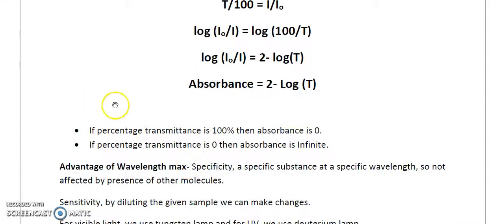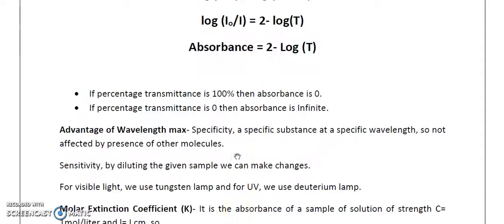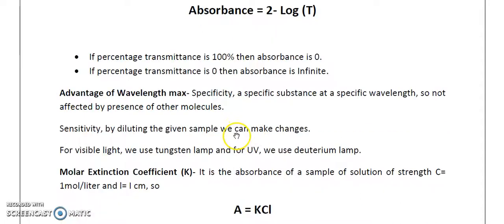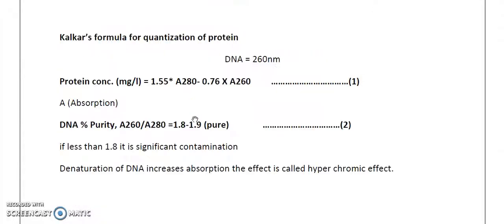From the equation absorbance = 2 − log T: if percentage transmittance is 100, then absorbance will be 0; if percentage transmittance is 0, then absorbance is infinite. Absorbance and transmittance are inversely proportional to each other. A diagram between percentage transmittance on the y-axis and concentration on the x-axis shows they are inversely proportional.